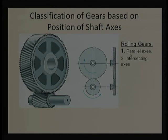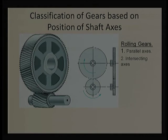Gears with parallel shaft axes — spur and helical gears — can be named rolling gears, because the motion at the contact surface is primarily rolling with relatively small sliding. In a similar category, bevel gears have intersecting axes — not necessarily 90 degrees; it can be 60, 70, or 80 degrees depending on the assembly requirement. The classification is based on the shaft axis relationship.